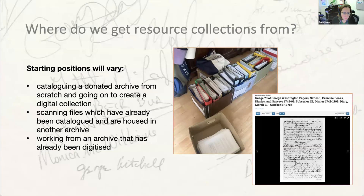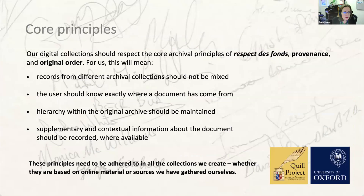The two types of collection you'll almost certainly encounter are: scanning files which have already been catalogued and housed in another archive such as the Library of Congress, or working from an archive that's already been digitized. We're going to walk you through the process of collecting files yourself in an archive. Even if you don't do that yourself, it highlights a process that has already taken place in online collections that you do access.